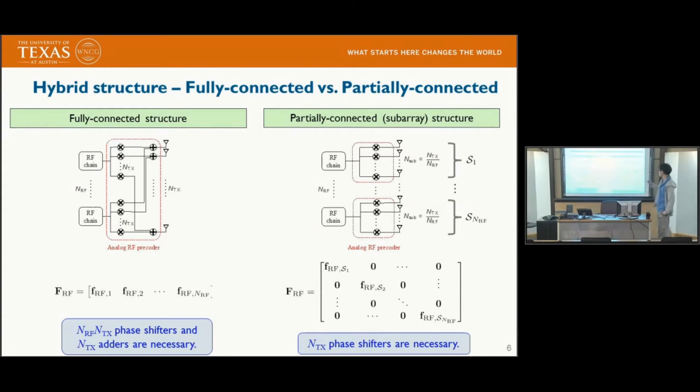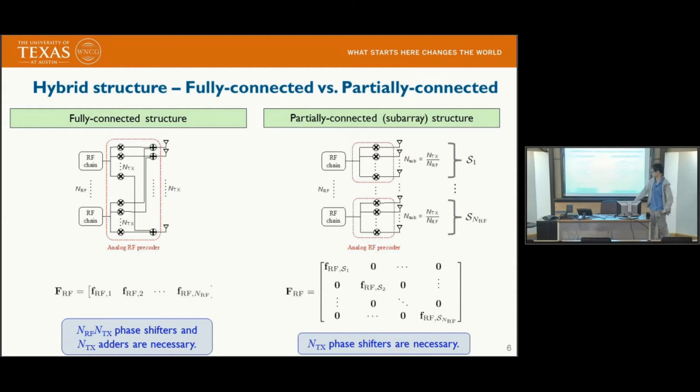In the partially-connected case, the analog pre-coder has a block diagonal structure, so only N_RF times N_TX phase shifters are necessary, reducing complexity and cost.